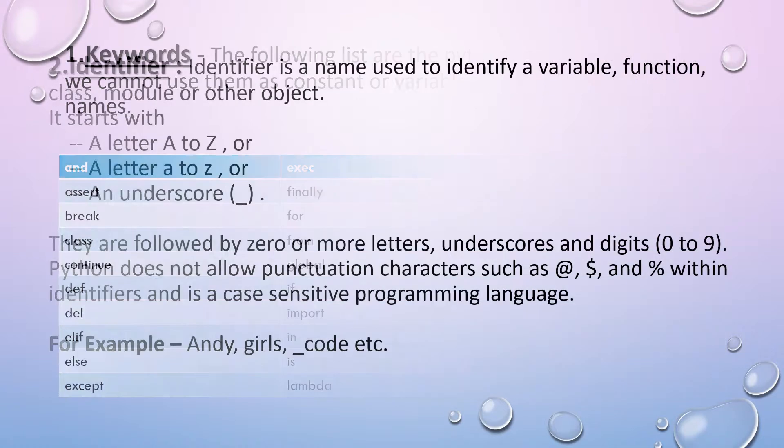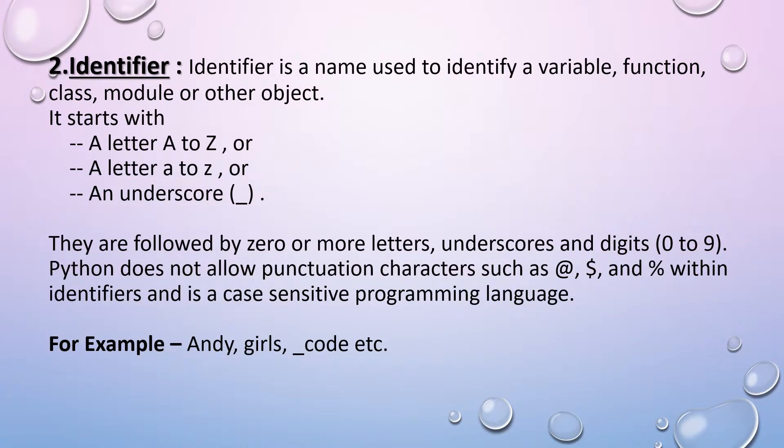So now we will see identifier. Identifier is a name used to identify a variable, function, class, module or other object means it is used to initialize and declare any name. The following are the rules which must be followed in order to declare any name or identifier. That is a letter capital A to capital Z must be used or a letter small a to small z be used or an underscore must be used for the first character of a word.